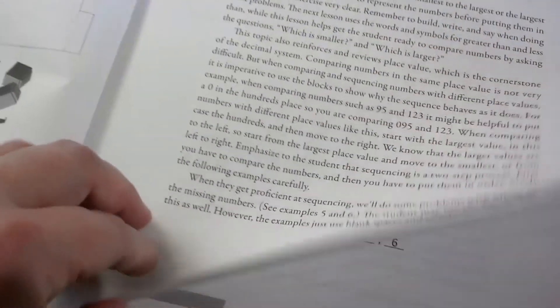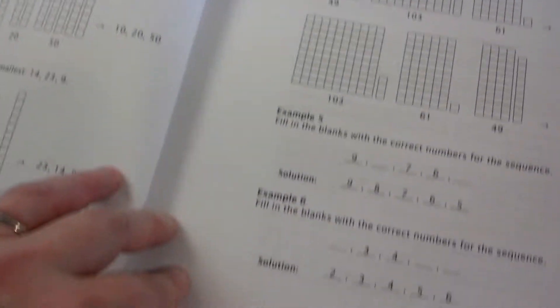Because sometimes people see just numbers and say, put them in order. They say, how'd I do that? So it's pretty easy when you have the blocks. So you want to use the blocks and write the numbers.